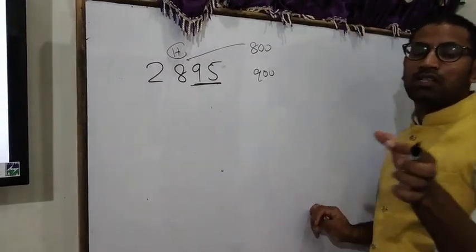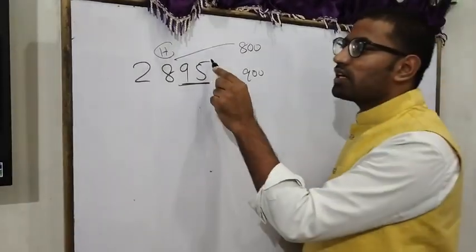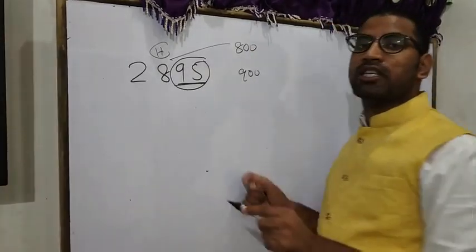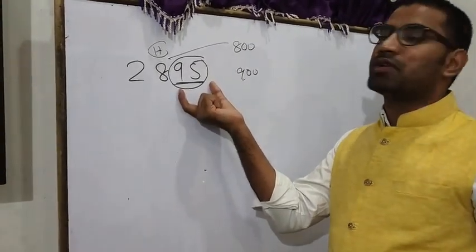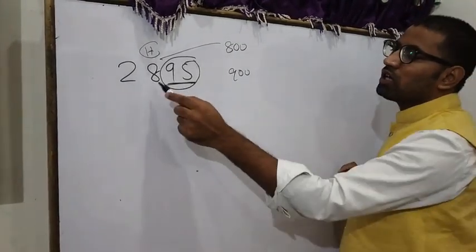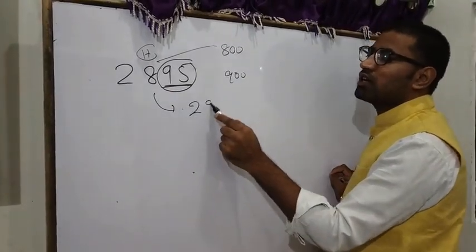95 is more than 50, so here we have to see that my ones and tens place is more than 50, which is 95, so the answer is 2,900.